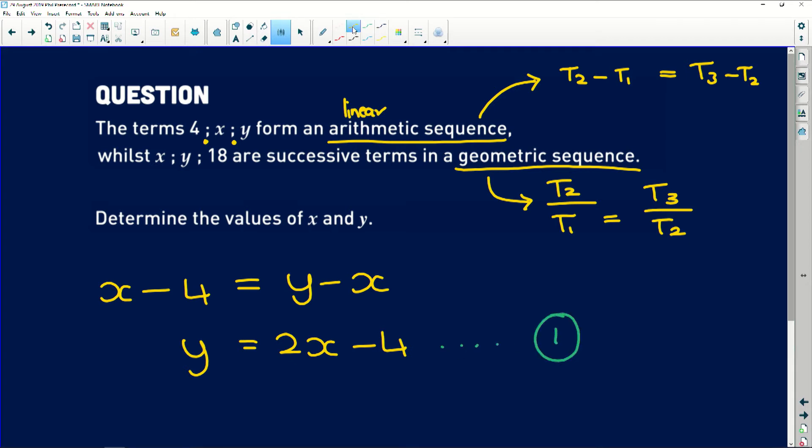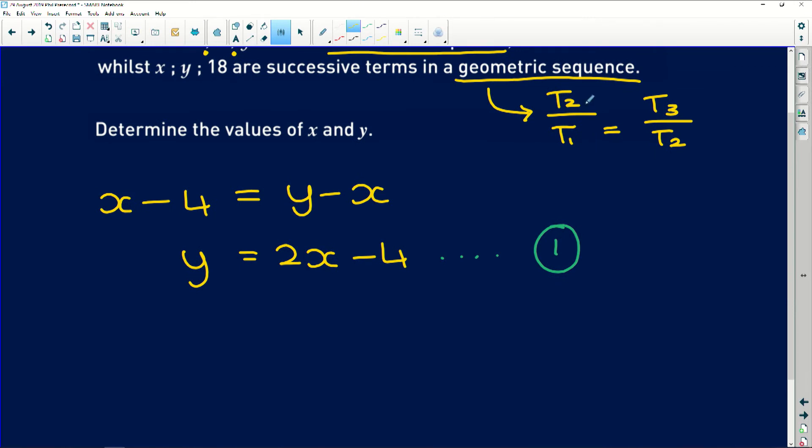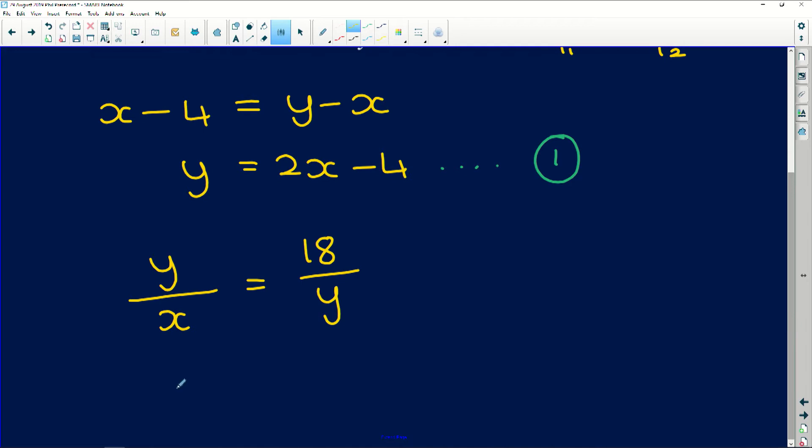Now remember, if we're trying to find two different variables, we need two simultaneous equations. So to deal with our geometric sequence, term 2 is y divided by term 1, which is x, will give us the same answers if we say 18 divided by y. And now, let's try and simplify this. So if we cross multiply, we're going to get y squared is equal to 18x. And that gives us our second equation.